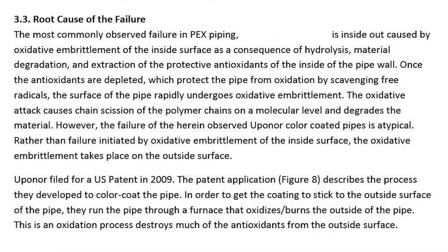Section 3.3: Root Cause of the Failure. The most commonly observed failure in PEX piping is inside-out, caused by oxidative embrittlement of the inside surface as a consequence of hydrolysis, material degradation, and extraction of the protective antioxidants from inside the pipe wall. Once the antioxidants are depleted, which protect the pipe from oxidation by scavenging free radicals, the surface rapidly undergoes oxidative embrittlement. The oxidative attack causes chain scission of the polymer chains on a molecular level and degrades the material. However, the failure of the herein observed Uponor color-coded pipes is atypical.